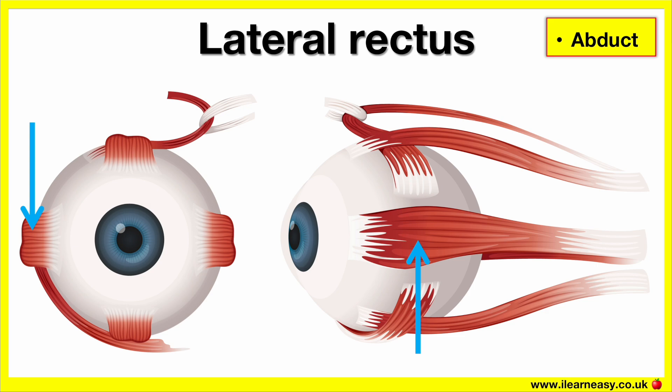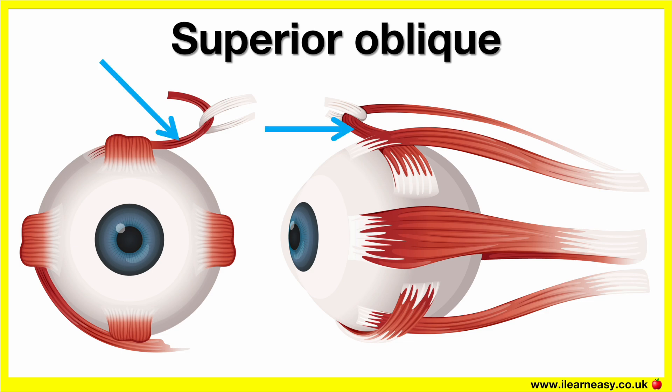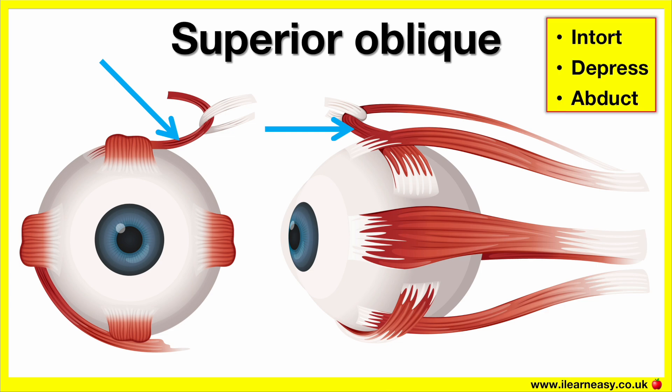Obliques. Superior oblique. The origin of the superior oblique is the sphenoid bone. It goes through the trochlea and inserts on the sclera. The insertion of the superior oblique is the superior lateral part of the sclera. The actions of the superior oblique are that it intorts, depresses, and abducts. This means it helps us to look down and out.